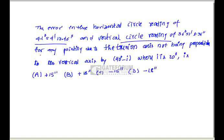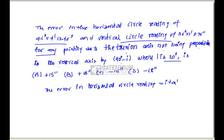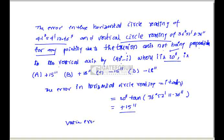Next question: find the error in horizontal circle reading and vertical circle reading for any point due to the trunnion axis not being perpendicular to the vertical axis by (90 − i) degrees, where i = 20 seconds. The error in horizontal circle reading = i × tan(h) = 20 seconds × tan(36° 52′ 36″) ≈ 15 seconds. The error in vertical circle reading is negligible.